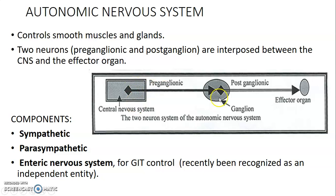From the CNS, you have your pre-ganglionic neuron, which synapses with the post-ganglionic within the ganglion. Then the post-ganglionic carries information to an effector organ, which could be a smooth muscle or a gland.